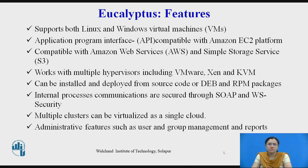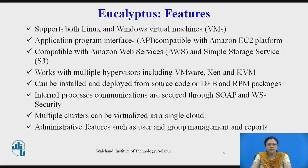The features of Eucalyptus include: it supports both Linux as well as Windows Virtual Machines. Its API is compatible with the Amazon EC2 platform and with Amazon Web Services (AWS) and Simple Storage Service (S3). It works with multiple hypervisors including VMware, Xen, and KVM. It can be installed and deployed from source code or DEB and RPM packages. Internal process communications are secured through SOAP and WS Security. Multiple clusters can be virtualized as a single cloud. Administrative features include user and group management and reports.